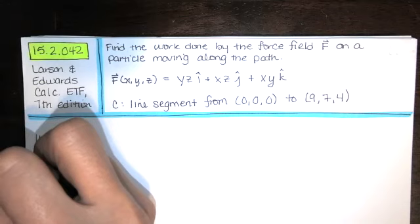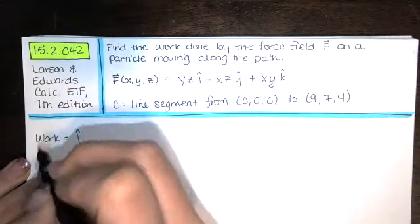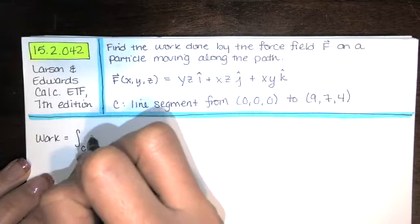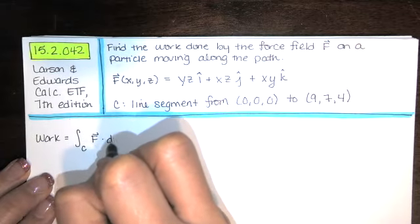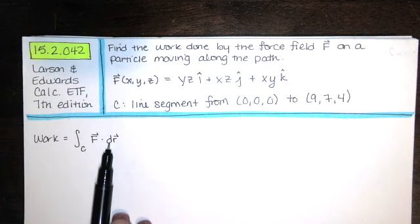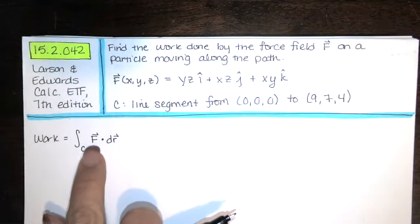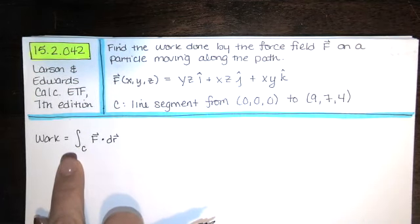Now, since we're finding the work done by a field F as we travel along a path C, that's given by this line integral. We're taking the force, and we're dotting it with a tiny displacement, and we're doing that for all of the points along that path C.